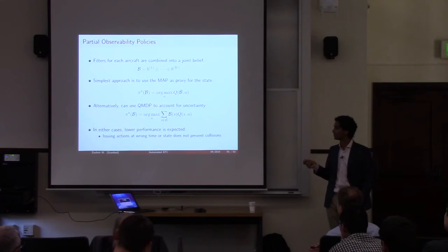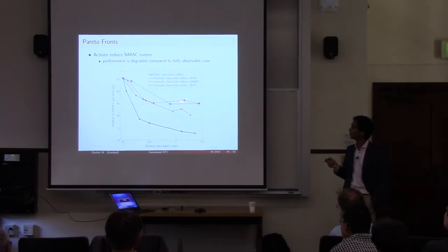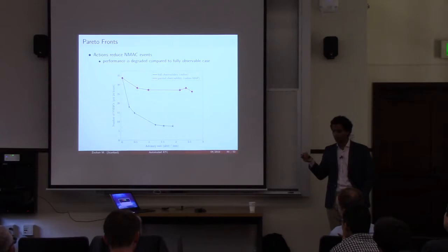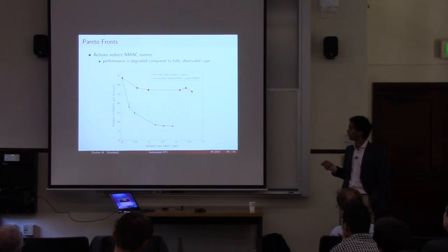Showing three different partially observable policies for the nominal airport: once again, as we increase the advisory rate, the rate of NMACs is reduced, but all three underperform the full observability policy. Likewise, running on the KFRG Republic Airport, again we see some reduction in the number of NMACs, but the full observability still outperforms the partial observability approaches. The problem is that estimation is difficult because of the distance between the observations we have and the states we're trying to infer.